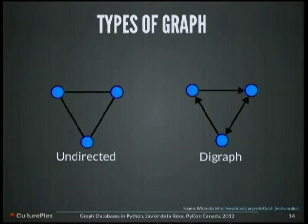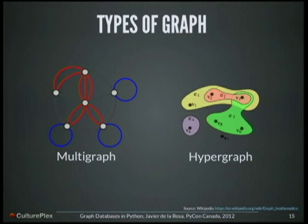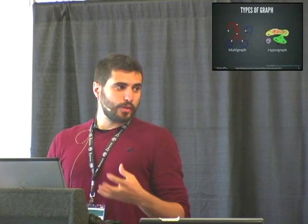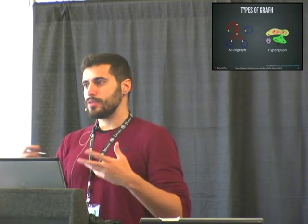So basically, a graph states that something is related to something else. There are types of graphs. We have an undirected graph — the most basic type, in which you have nodes and a relationship that connects only two nodes. If those relationships are directed, we can talk about a directed graph or digraph. If you can find more than one relationship between the same pair of nodes, then we have a multigraph, and if those relationships are also directed, we have a multi-digraph.